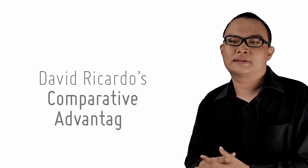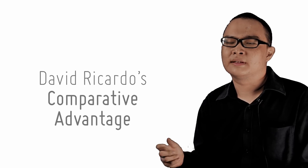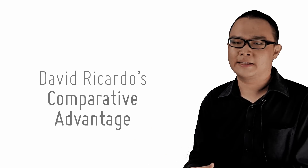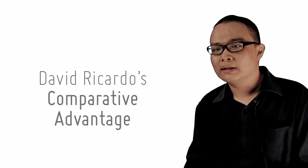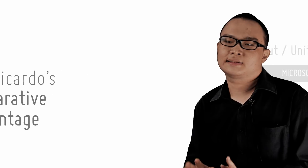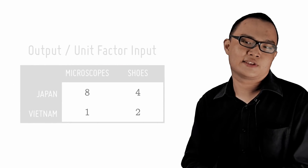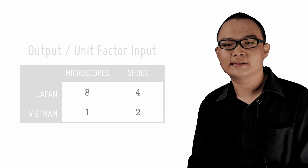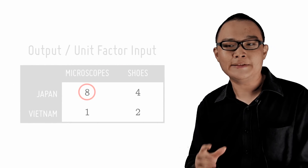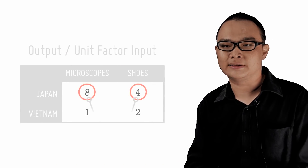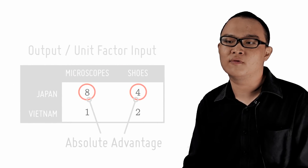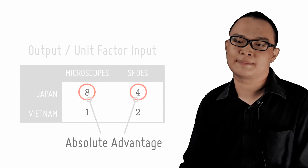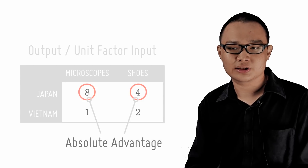This is David Ricardo's difficult theorem: the theory of comparative advantage. What it says is that mutually beneficial trade can still happen even when one country can produce both goods at an absolute advantage.